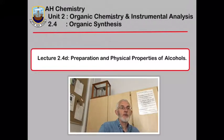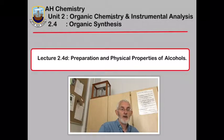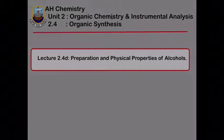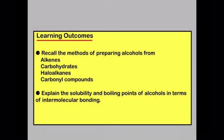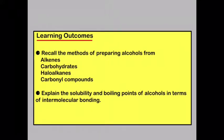In this lecture we're going to look at the preparation and physical properties of alcohols. By the end of this lecture you should be able to recall the methods of preparing alcohols from alkenes, carbohydrates, haloalkanes and carbonyl compounds. You should also be able to explain the solubility and boiling points of alcohols in terms of intermolecular bonding.